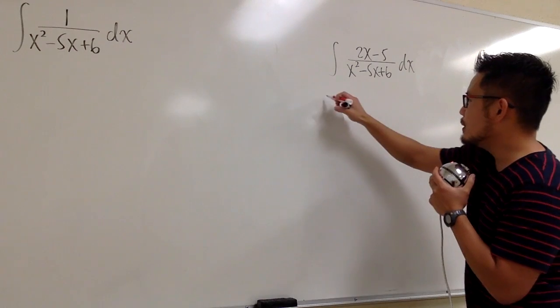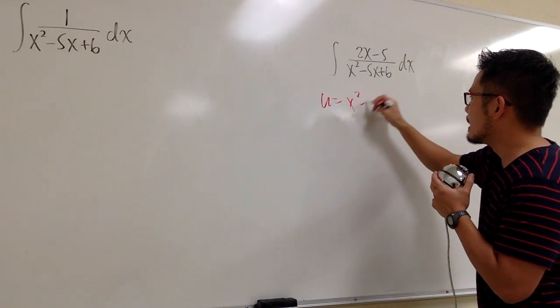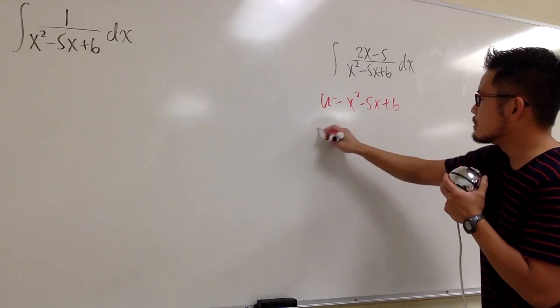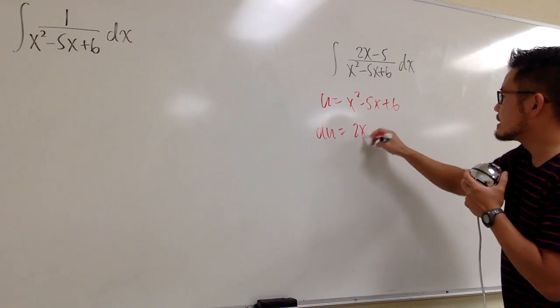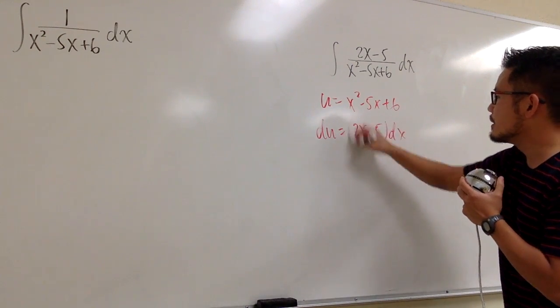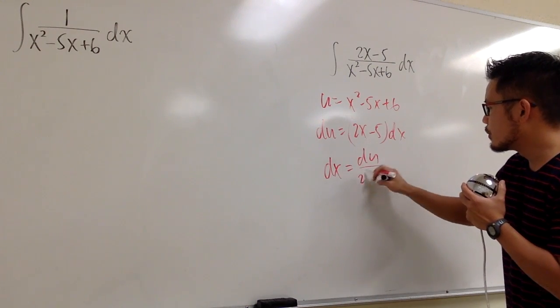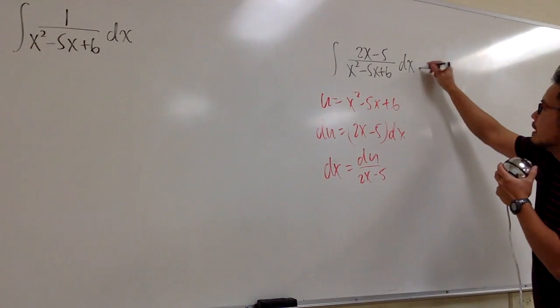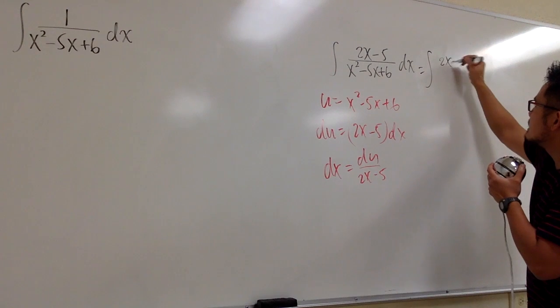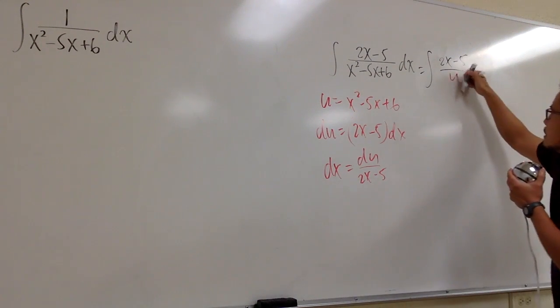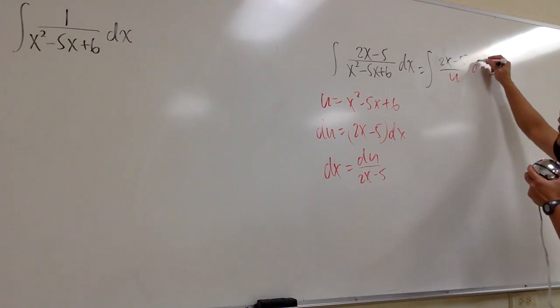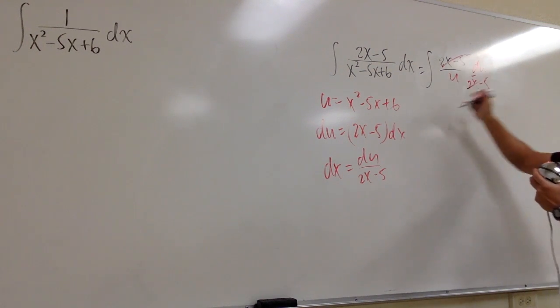So let's go ahead and do it. Then u is equal to x squared minus 5x plus 6. And then let's do du, which is 2x minus 5 dx, and then we can divide both of them by that. So we get dx is equal to du over 2x minus 5. And then we can take this into the u world. On the top is the 2x minus 5 over the denominator is u, and then dx is that, so we have the du over 2x minus 5. This and that cancel.